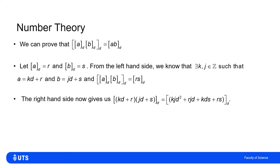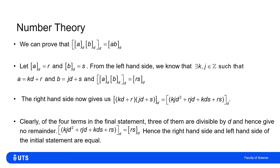On the right-hand side, replacing a with kd plus r and b with jd plus s and expanding the brackets gives kjd squared plus rjd plus kds plus rs, and we take its remainder when divided by d. The first three terms each contain a factor of d, so their remainders when divided by d are zero. All that remains is the remainder of rs when divided by d — which matches the left-hand side. So this is proven.